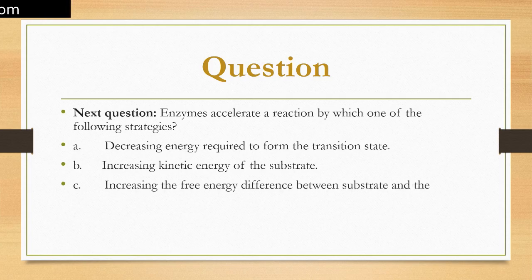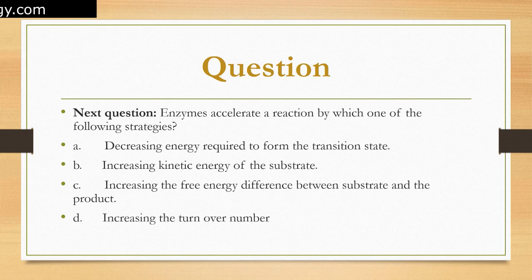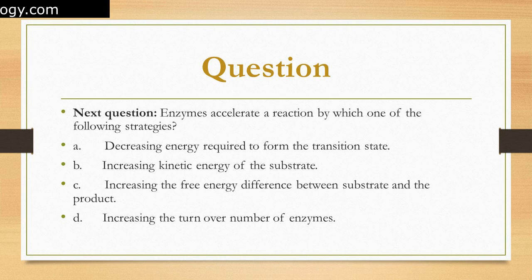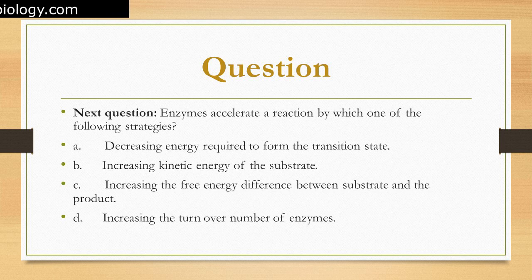Option D: Increasing the turnover number of enzymes. Enzymes accelerate a reaction by decreasing the energy required to form the transition state.